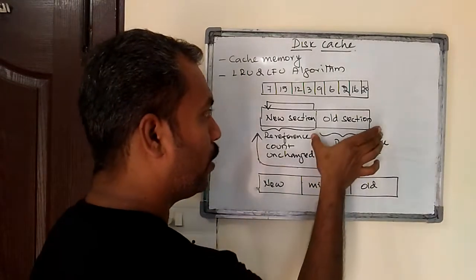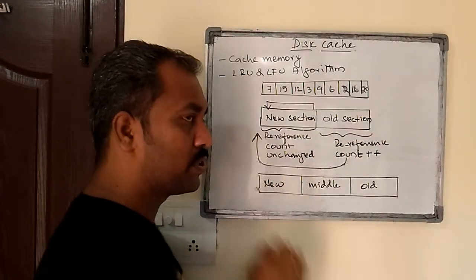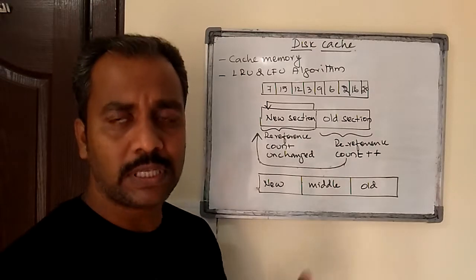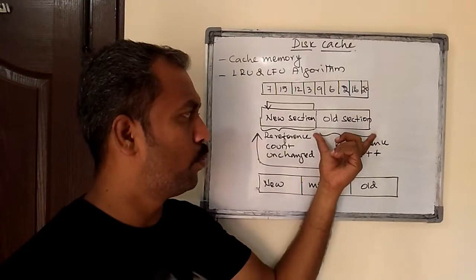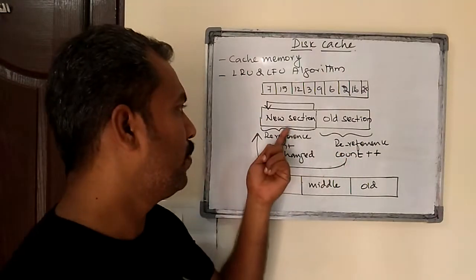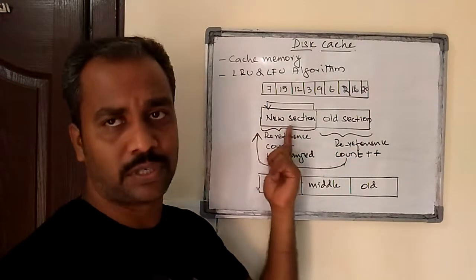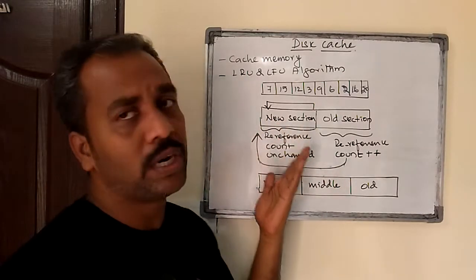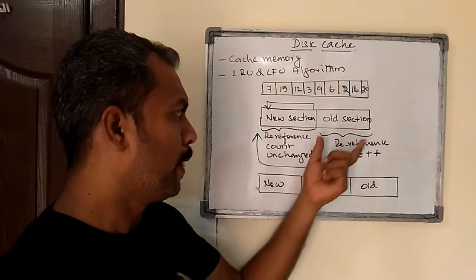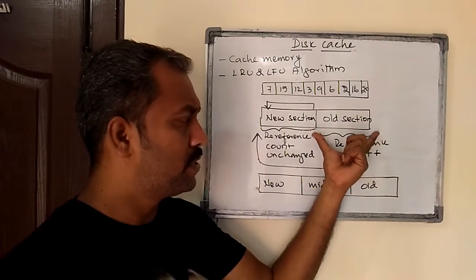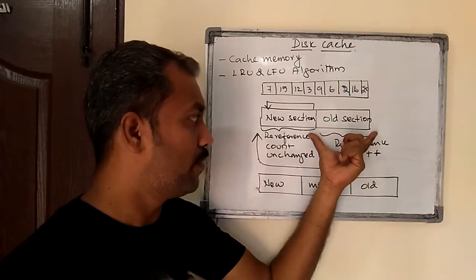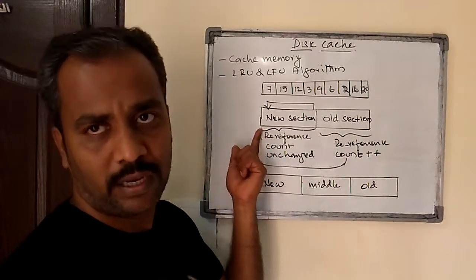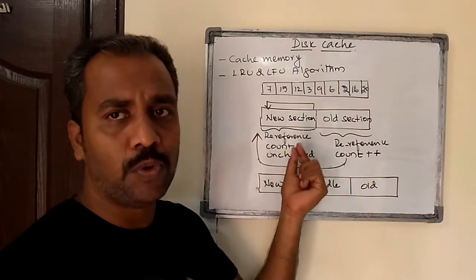It is not going to be increased. But in the VOD section, if a page is in this section, it has been there for a longer time, which means the count value of the VOD section is ultimately greater than the new section. Even if pages in the new section are re-referenced, we are not interested in increasing the frequency. But whenever pages from the VOD section are re-referenced, that sector's count will be increased by one.